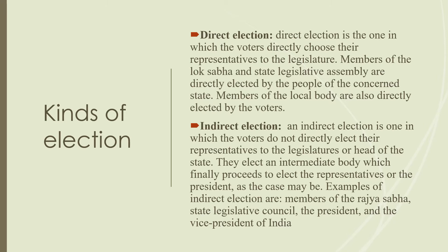There are two types of election: direct election and indirect election. Direct election is the one in which voters directly choose the representatives of the legislature. For example, members of the Lok Sabha and members of the state assembly — MPs and MLAs — are elected directly by the people.